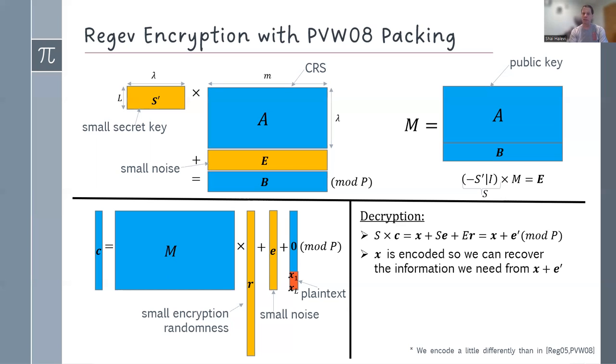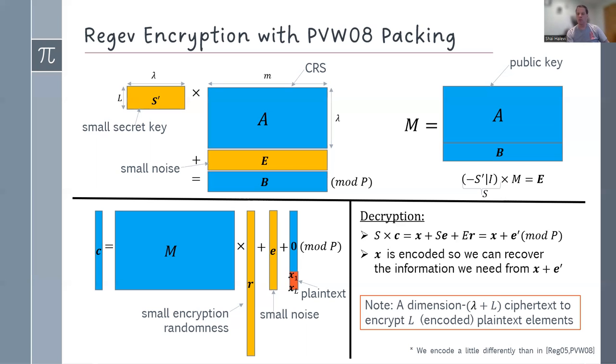How do you decrypt? You just multiply the secret key by the ciphertext. If you manipulate this expression, you see that what it gives you is the original vector x with all the plaintext elements, plus some vector that has low noise. So it's x with a little bit of noise. And if your x was encoded to begin with, then you can recover the information from this noisy vector. So this is how Regev encryption works. Notice that the ciphertext vector has dimension L plus security parameter. So bandwidth wise, you're losing in that you had to encode your elements, and you're losing in that you increase the dimension by security parameter.